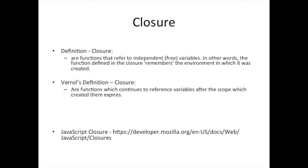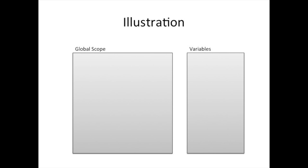Let's see some details. A couple of videos back we talked about scopes. There's global scope — you always have the global scope regardless of whether you're in a web browser or a Node.js environment. It also comes with some built-in variables, but those aren't important here. The key point is that we have global scope, and a function introduces its own variable scope.